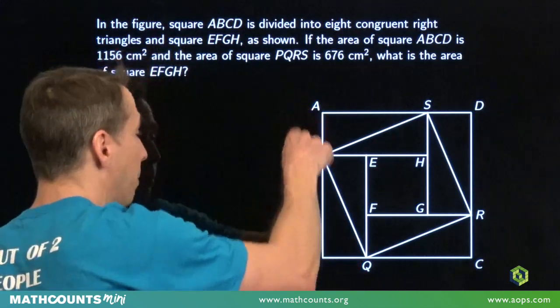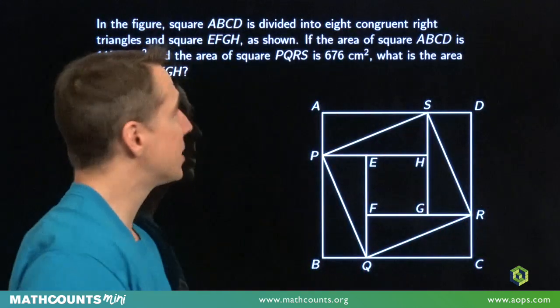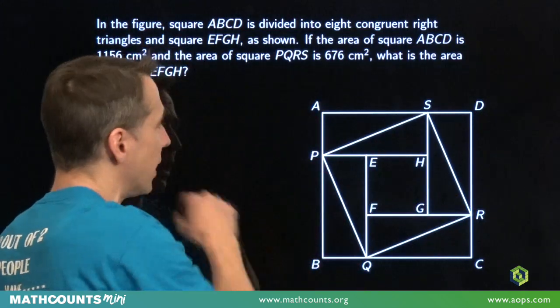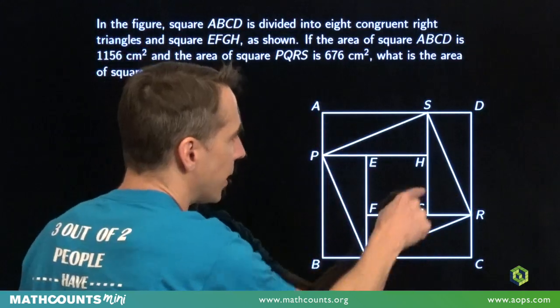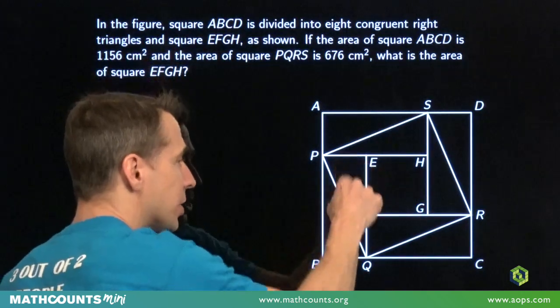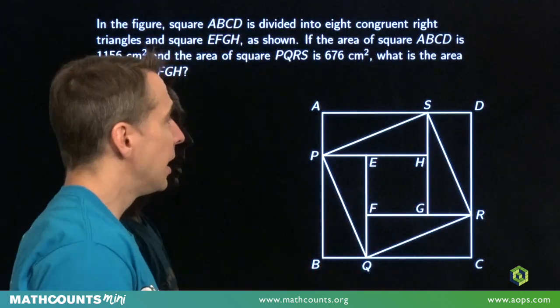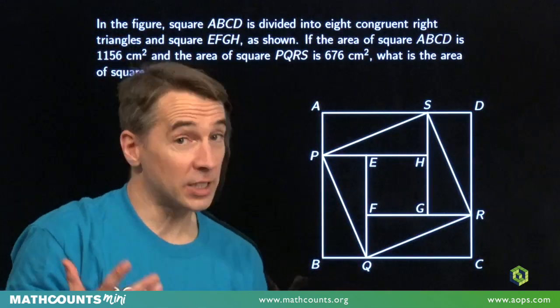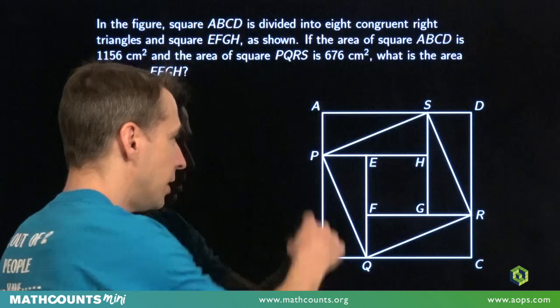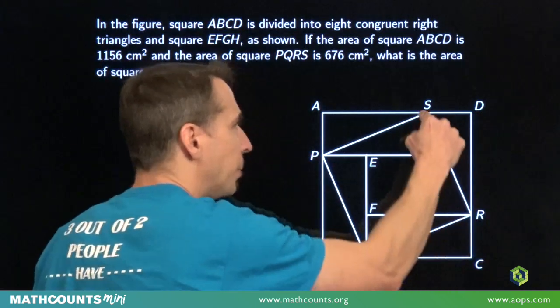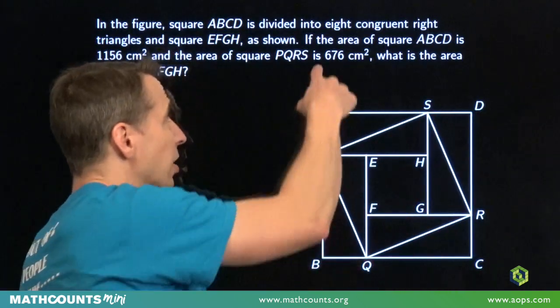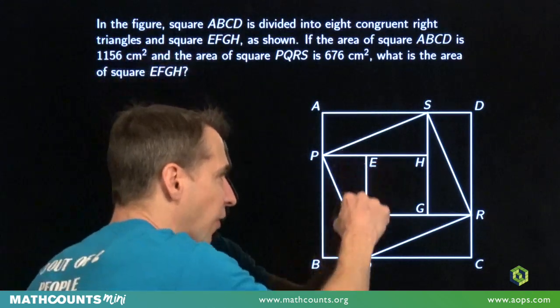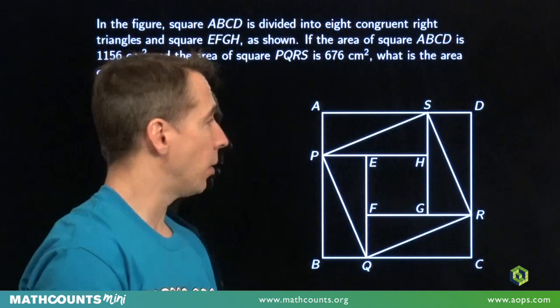Alright, in this problem we have a big square right here, ABCD. Now this big square is divided up into eight congruent right triangles, these little triangles right here, and one little square in the middle, EFGH. Now the area of the big square is 1156 square centimeters, and then this crooked square in here, PQRS, its area is 676 square centimeters. We have to find the area of the little square in the middle.